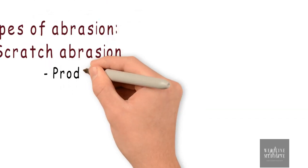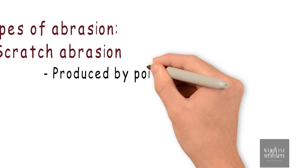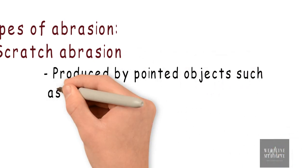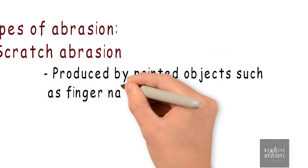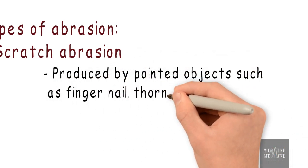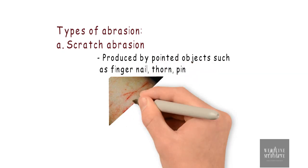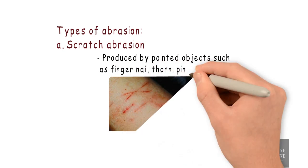Scratch abrasion is produced by pointed objects such as a fingernail, thorn, or pin. The injury has significant length but no significant width.